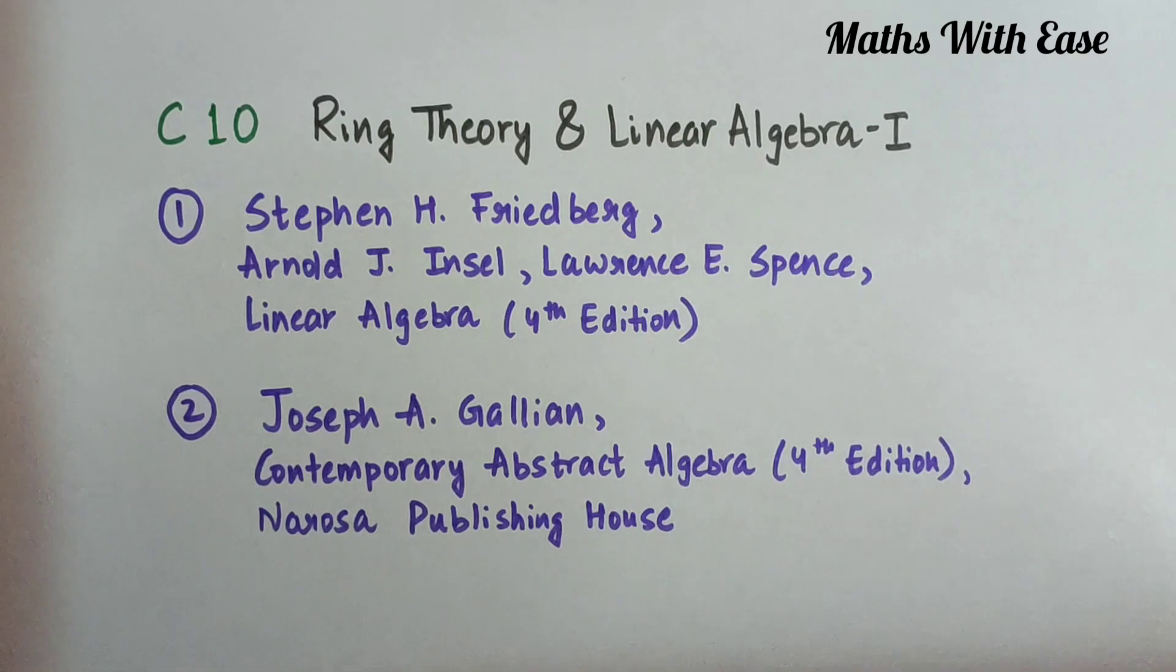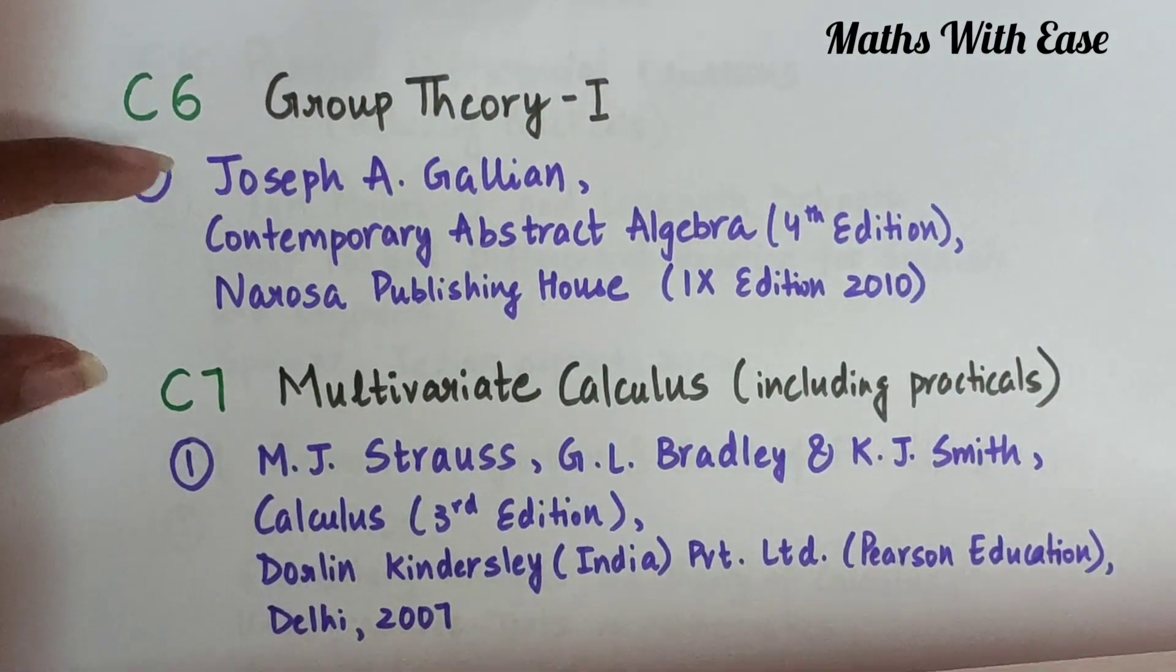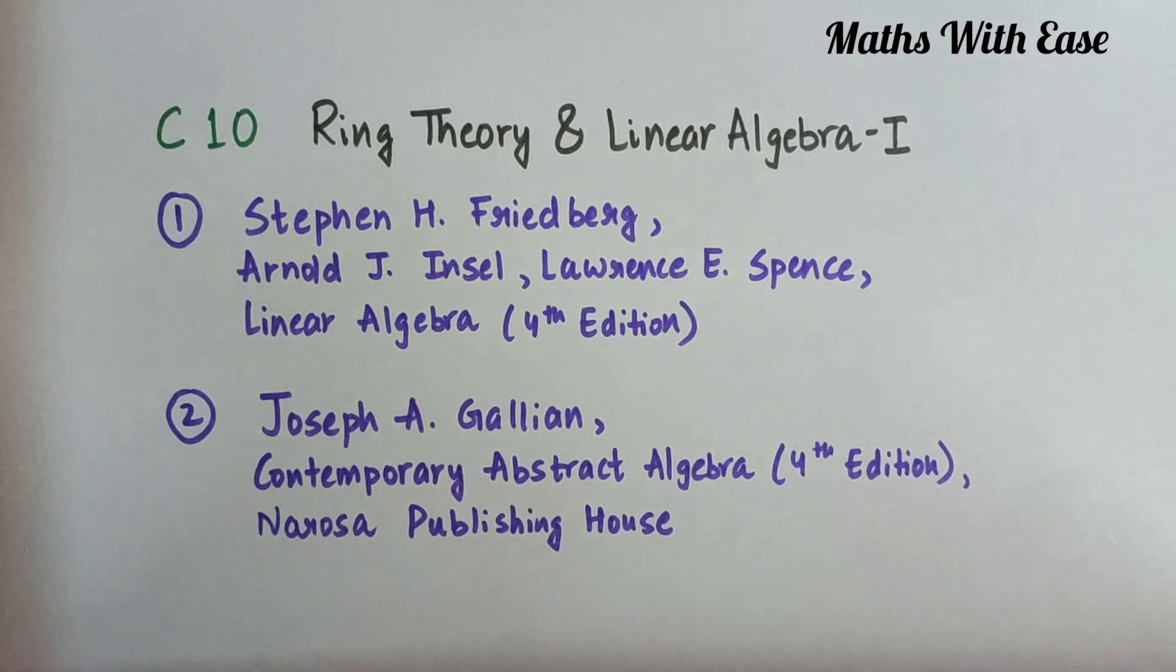Coming to the C10 subject, the last subject we have for second year which is Ring Theory and Linear Algebra 1. For this, we have two books. First is Stephen H. Fridberg, Arnold J. Enzel, Lawrence E. Spence, Linear Algebra 4th edition. Fridberg is a famous book for studying Linear Algebra 1. The second book is Joseph E. Gallien, Contemporary Abstract Algebra 4th edition. This is the same book that we are going to study for Group Theory 1, because this book contains both Group Theory topics as well as Ring Theory topics.